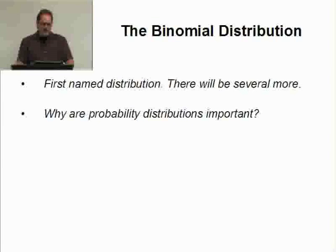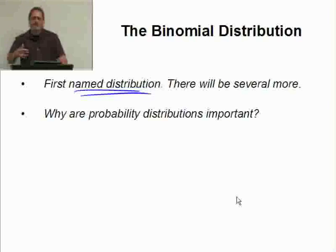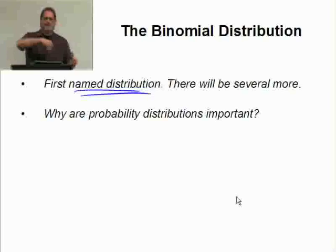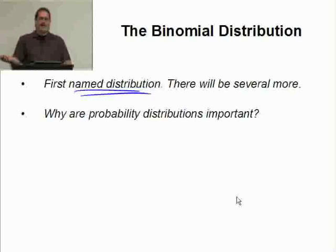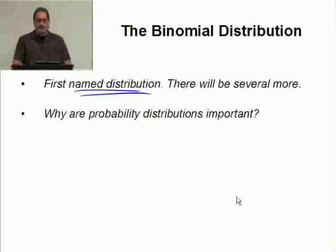The binomial distribution is actually our first named distribution. So far we've looked at something skewed right, skewed left — here's the probability distribution for playing the game of craps, rolling dice, or flipping a coin. This is our first named distribution: the binomial distribution. There will be several more named distributions that we will work with.